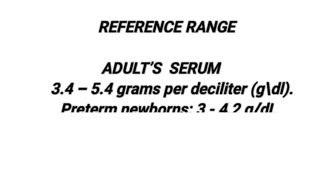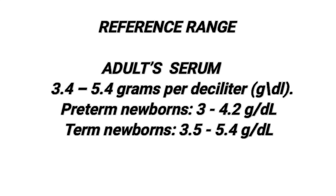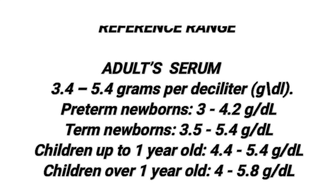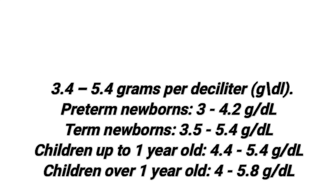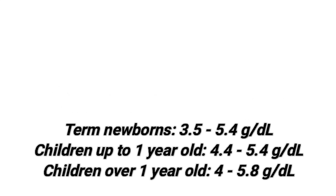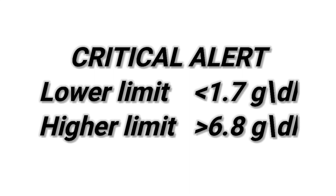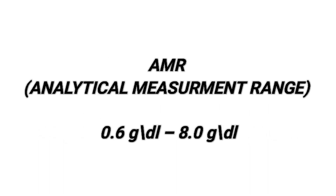For preterm newborns, the range is 3.5 to 5.4 grams per deciliter. Children up to one year old: 4.4 to 5.4 grams per deciliter. Children over one year old: 4.0 to 5.8 grams per deciliter. Critical alert lower limit is less than 1.7 grams per deciliter, and the higher limit is more than 6.8 grams per deciliter. AMR is 0.6 to 8.0 grams per deciliter.